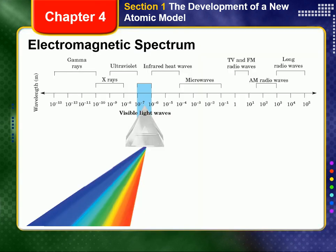The electromagnetic spectrum is represented in Figure 4-1 on page 92 of your text. All forms of electromagnetic radiation move at a constant speed of about 3.0 x 10 to the eighth meters per second through a vacuum and at a slightly slower speed through matter. Because air is mostly empty space, the value of 3.0 x 10 to the eighth meters per second is also light's approximate speed through air.